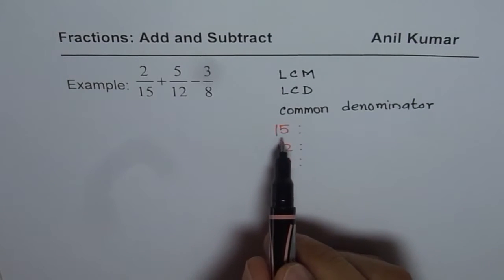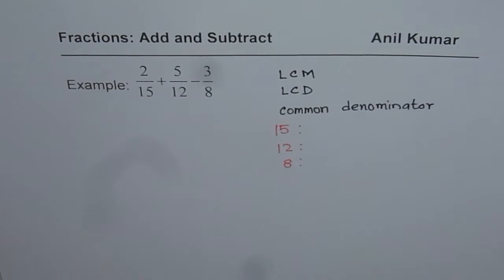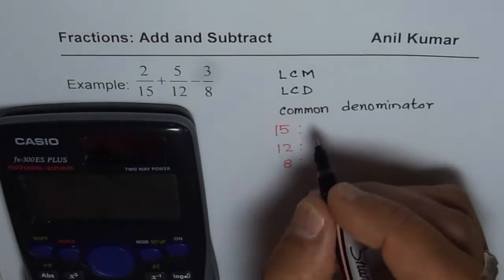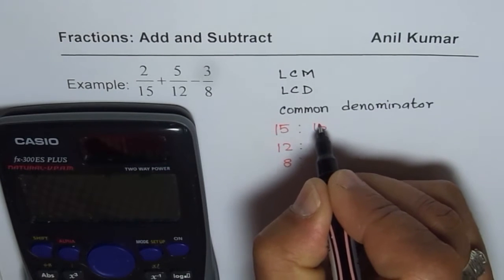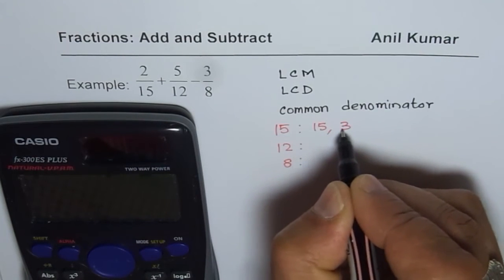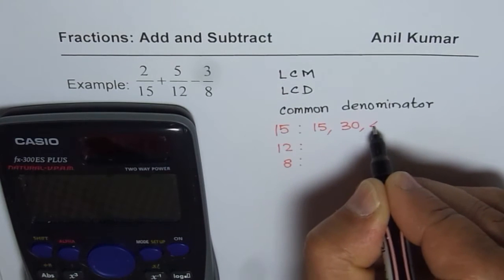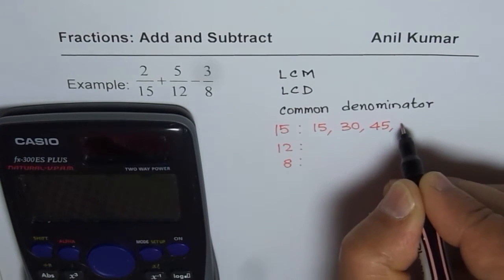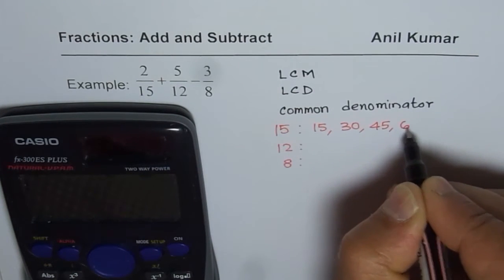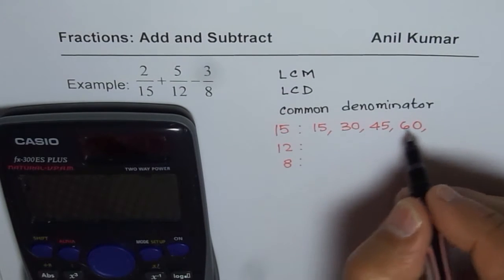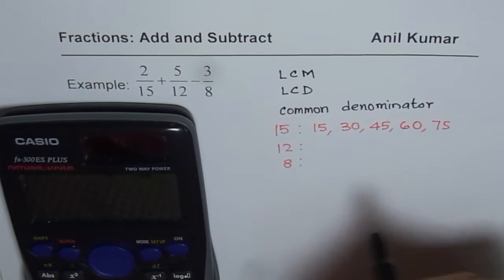My suggestion is always to start with the greatest number, so that kind of helps us. We can use calculator if the numbers are big. We have 15, then times 2 will be 30 and then we just keep on adding 15 to it. So we have 45 and then we have 60 and then we have 75, likewise.